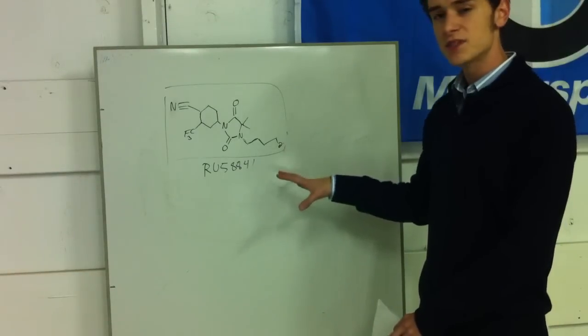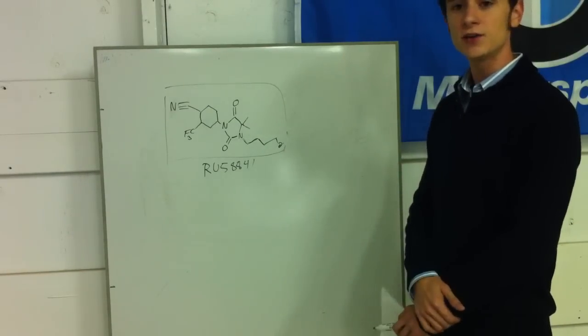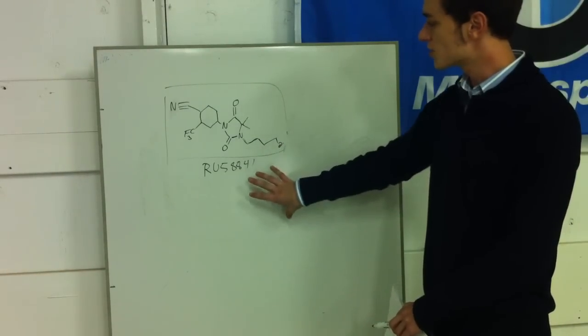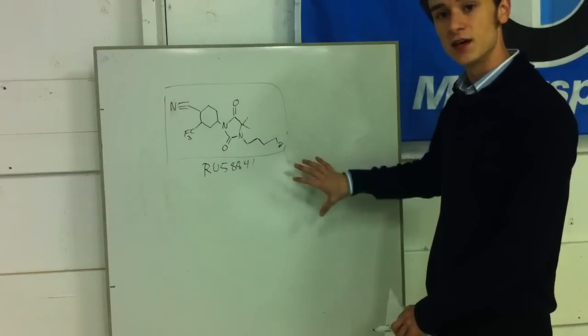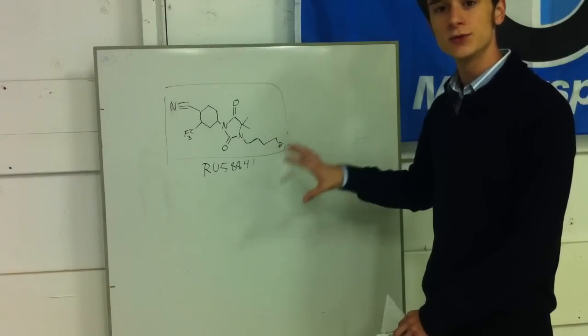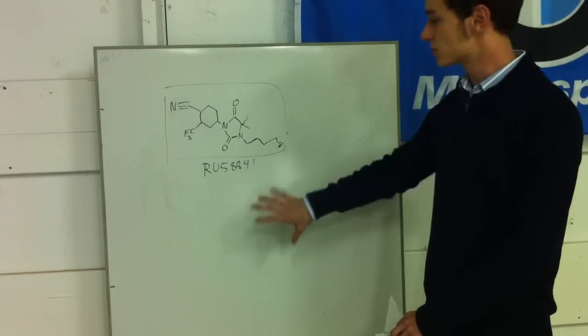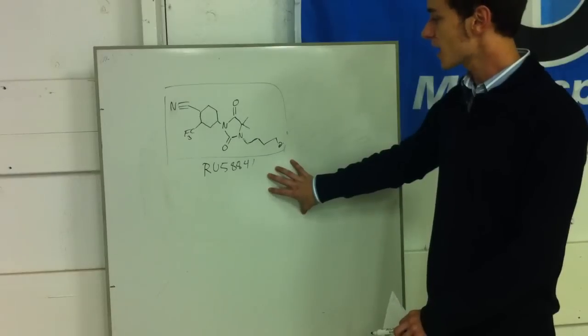So how do you get around that? How do you, like I've been saying all along in all of my videos, how do you more selectively put RU58841 into the cells so it can begin to block the androgen receptors and do its duty?